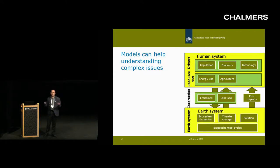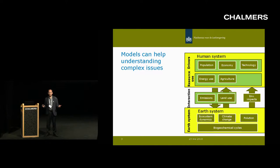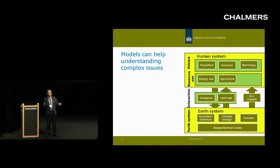So how do these tools look? Typically, an integrated assessment model has a representation of the human system and of the earth system and the interaction between them. In the human system, most of these models look at two subsystems: the energy system and the land-use system, and also the connections between them, which is mostly via biofuels.